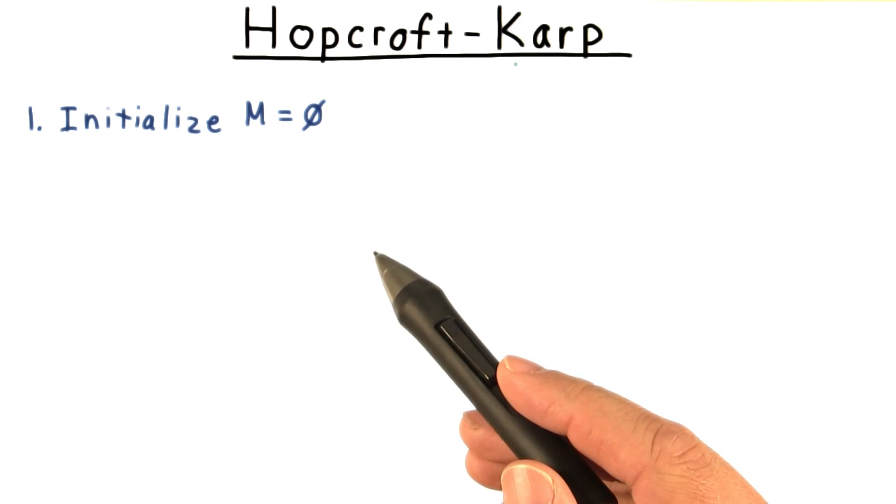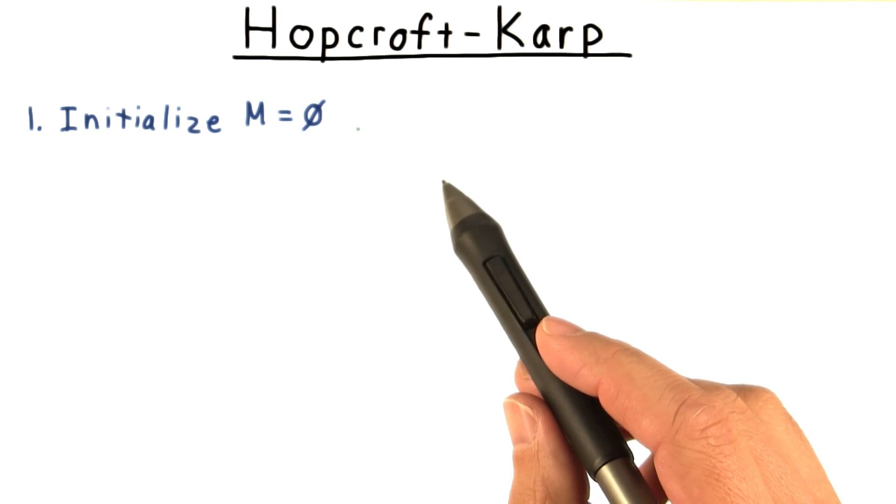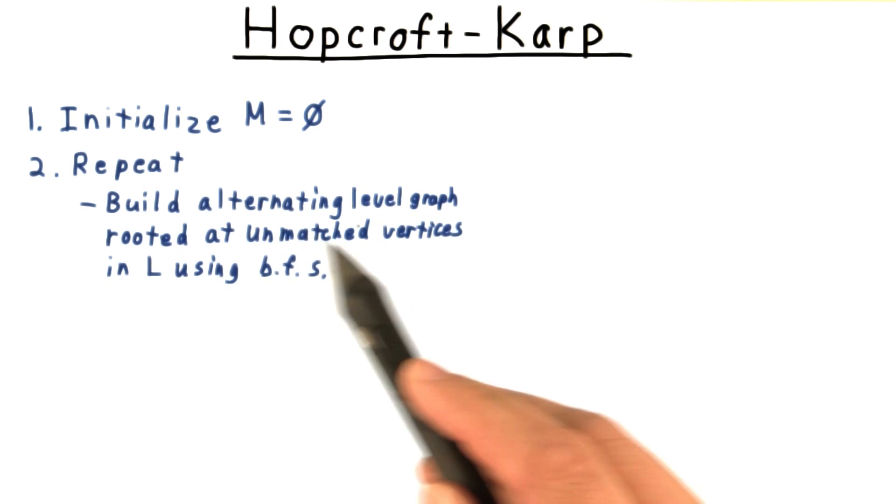The Hopcroft-Karp algorithm goes like this. We first initialize the matching to the empty set. Then, we repeat the following.